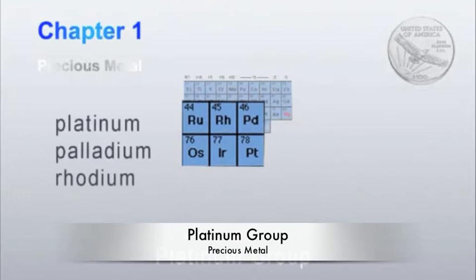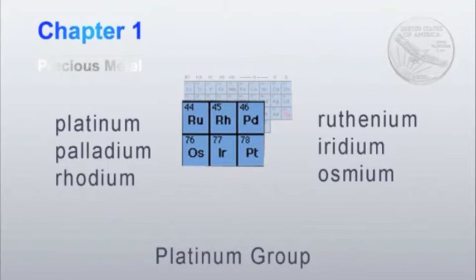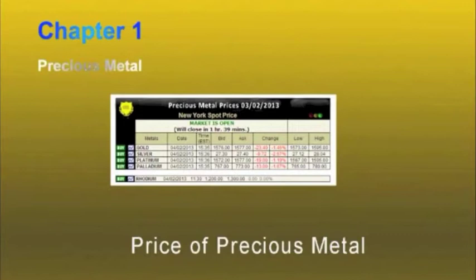These include platinum, palladium, rhodium, ruthenium, iridium, and osmium. The price of precious metals is driven by two factors.